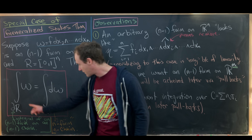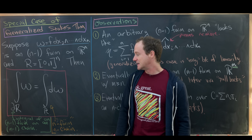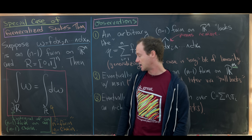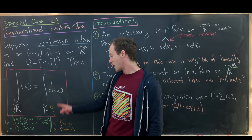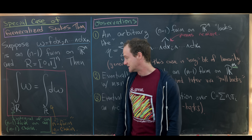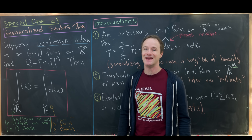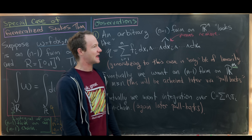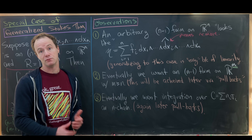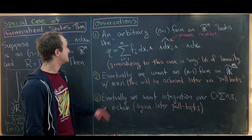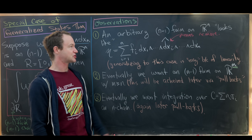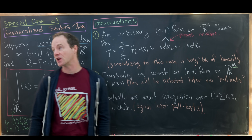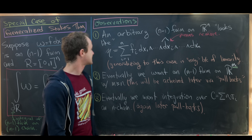I just want to point out that this left-hand integral is the integral of an n minus 1 form on an n minus 1 chain, whereas this right integral is the integral of an n form on an n chain. So let's look at some of the simplifications that we've made before we move on to our proof. First is that an arbitrary n minus 1 form on R^n is actually a linear combination of things that look like this.